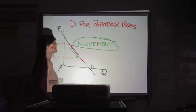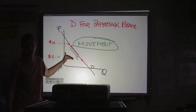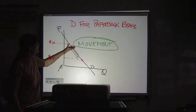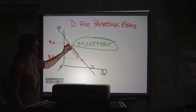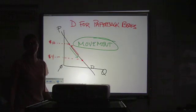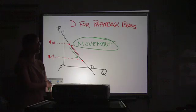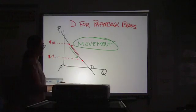That is called a movement. A movement reflects different quantities based on changes in price. Change the price, you move along a given curve because it's drawn to reflect different prices. That's how we put it exactly where it is. So, that's the first thing that you have to understand about changing a situation. Drawn for different prices, all you do is move up or down.